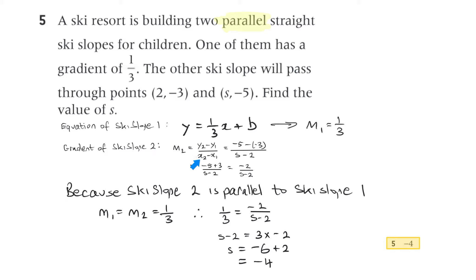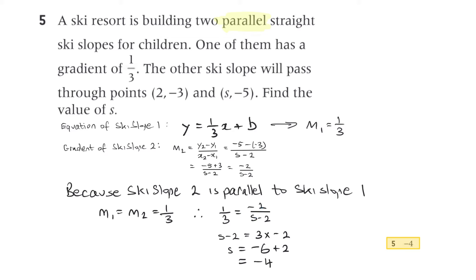Using the gradient formula y2 minus y1 over x2 minus x1 for ski slope 2, we get minus 5 minus minus 3 over s minus 2, giving m2 equals minus 2 on s minus 2. Since m1 equals m2 equals 1 third for parallel lines, we set 1 third equals minus 2 over s minus 2 and solve for s, finding s equals minus 4.